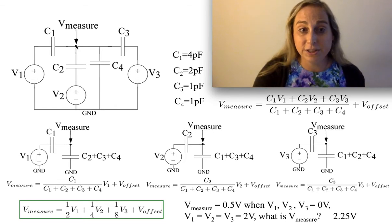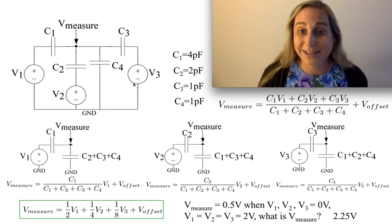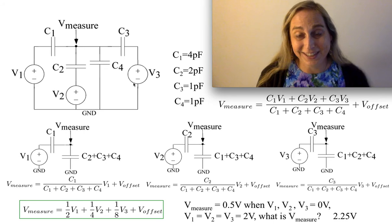But notice I was given this initial condition that the measurement voltage here is half a volt when all of these are at ground. In other words, I know the offset voltage. I know it very directly.